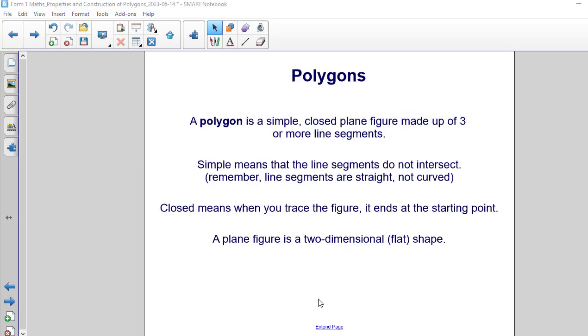A polygon is a simple closed plane figure made up of three or more line segments. Simple means that the line segments do not intersect. Remember that line segments are straight and not curved. Closed means that when you trace the figure it ends at the starting point. A plane figure is a two-dimensional or flat shape.